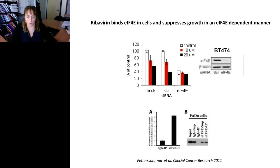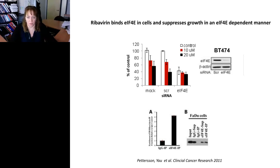Of course biophysics is lovely, but does this happen in cells? Work from Wilson Miller's lab, particularly Philippa Peterson, showed that if you knock down 4E in breast cancer cells, ribavirin no longer has an effect at 10 or 20 micromolar concentrations — consistent with removing the drug target. Additionally, in a tritiated ribavirin immunoprecipitation experiment, cells treated with tritiated ribavirin immunoprecipitated with 4E antibody showed quite substantial enrichment over IgG control, indicating that within cells ribavirin and 4E are interacting.